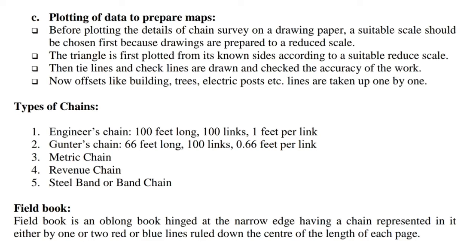Types of chains: 1. Engineer's chain — 100 feet long, 100 links, 1 foot per link. 2. Gunter's chain — 66 feet long, 100 links, 0.66 feet per link. 3. Metric chain. 4. Revenue chain. 5. Steel band or band chain.